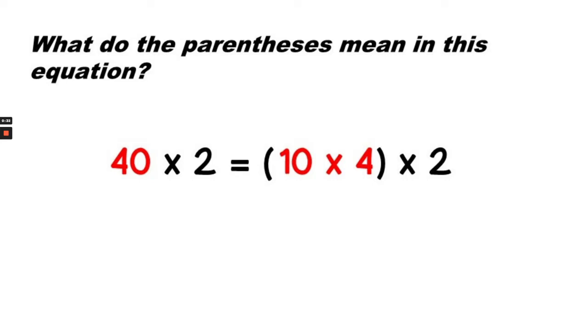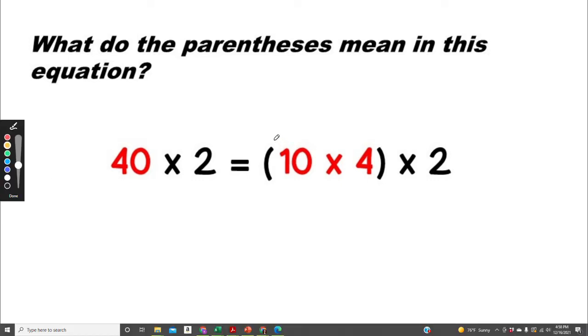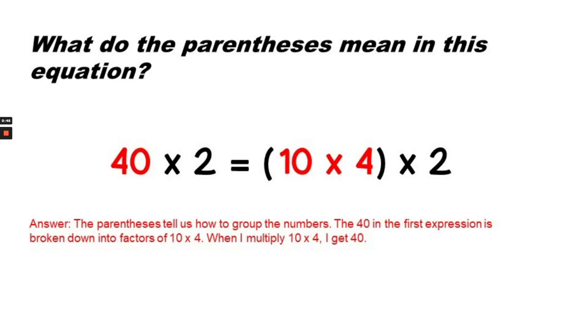What do the parentheses mean in this equation? The parentheses tell us how to group the numbers. The 40 in the first expression is broken down into factors of 10 times 4. When I multiply 10 times 4, I get 40.